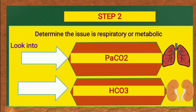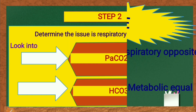Step 2 — determine the issue: is it respiratory or metabolic? In Step 1 we identified whether the result is acidosis or alkalosis. In Step 2 we determine whether it is respiratory or metabolic by looking at PaCO2 or bicarbonate. PaCO2, the carbon dioxide level, is controlled by the lungs, while bicarbonate is regulated by the kidneys.